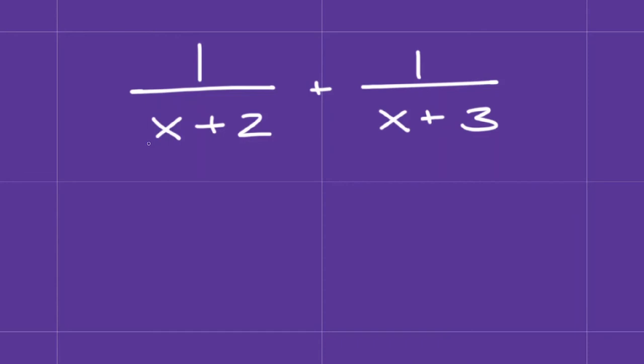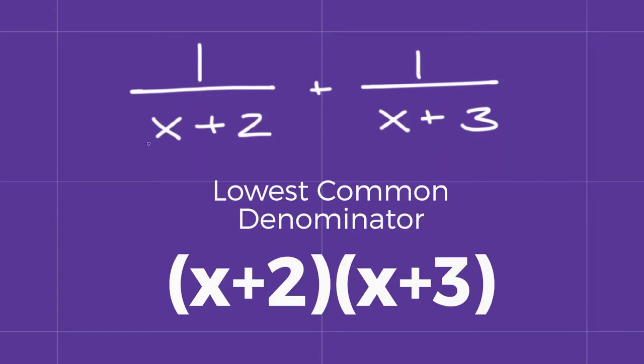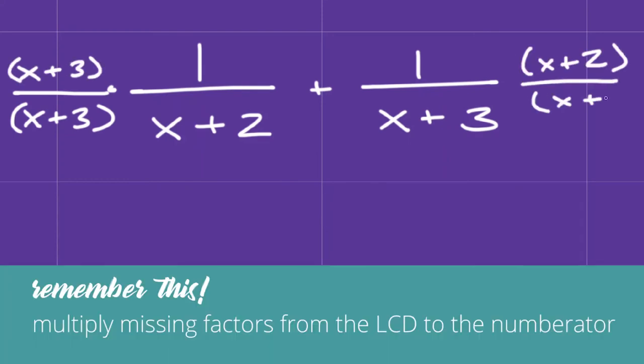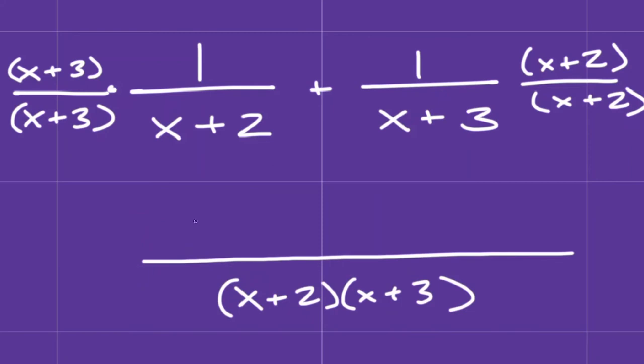The easiest way of approaching this problem is to join the fractions on the bottom. We'll make x plus 2 times x plus 3 the common denominator here and multiply the missing factor to each numerator. From there, we'll join the fractions and then combine like terms in the numerator.